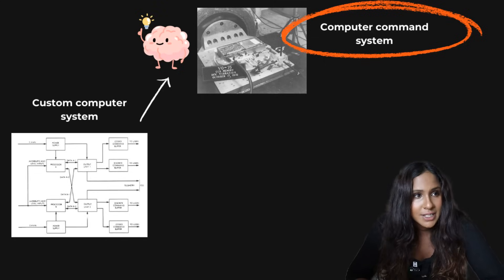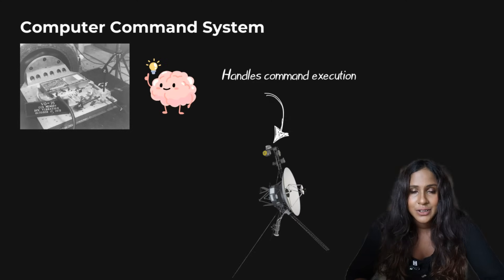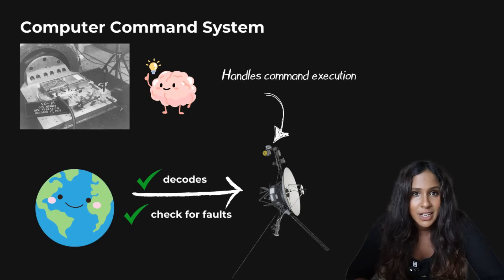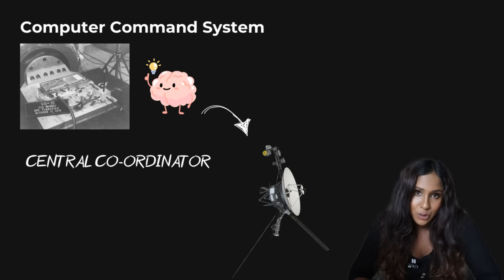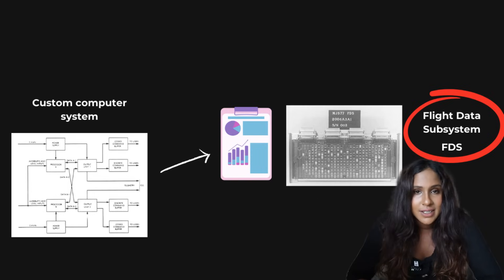Now your computer command system or your CCS, this is essentially Voyager's brain. It handles command execution, decodes any instructions sent from Earth, and manages fault detection and correction routines. Think of it like a central coordinator, ensuring that all systems generally run smoothly.